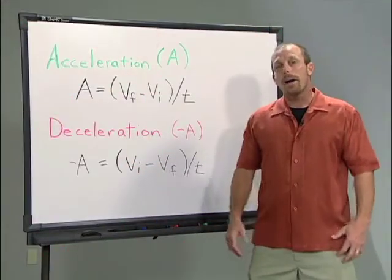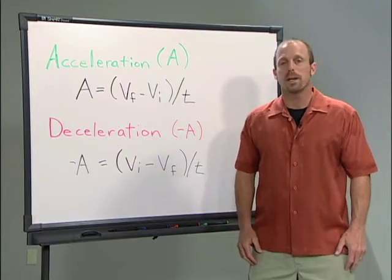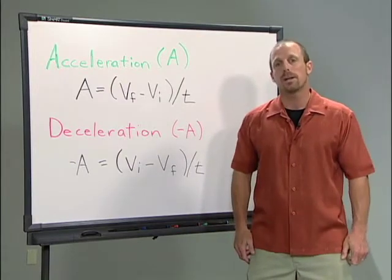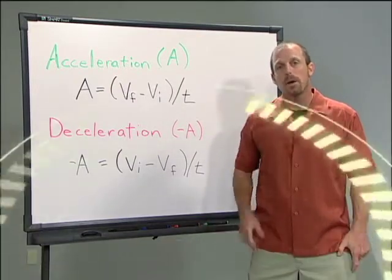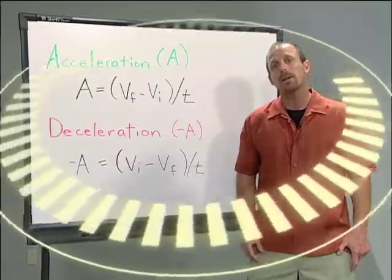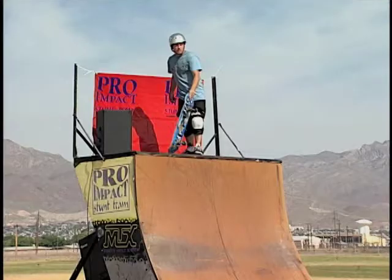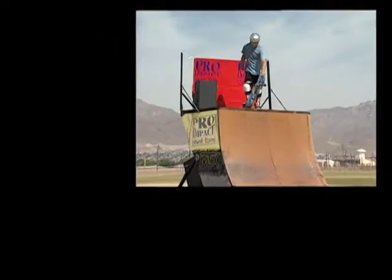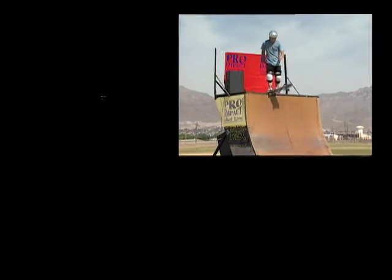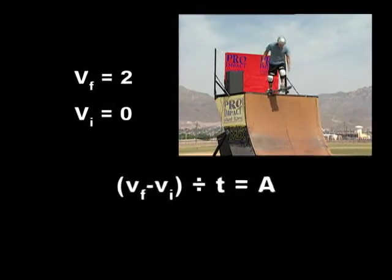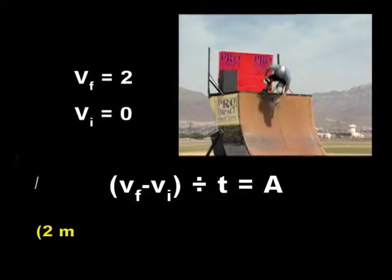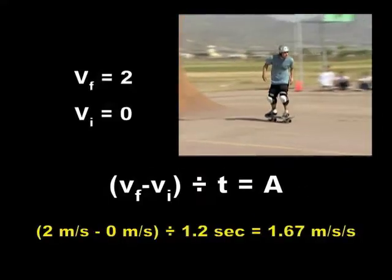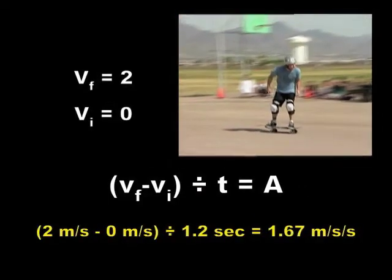If the rider had a final velocity of 2 meters per second and it took 1.2 seconds for the rider to drop in on the ramp, can you calculate the acceleration? In this example, the final velocity is 2 and the initial velocity is 0. Dividing the difference by 1.2 gives a final acceleration of 1.67 meters per second per second.